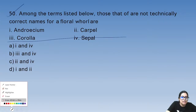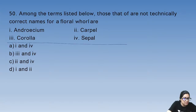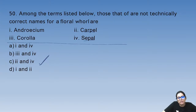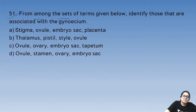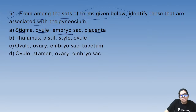Question 50: which names are not technically correct? We don't use 'sepal' and 'carpal' — we use 'calyx' and 'corolla'. Question 51: terms associated with the gynoecium include stigma, ovule, embryo sac, and placenta.